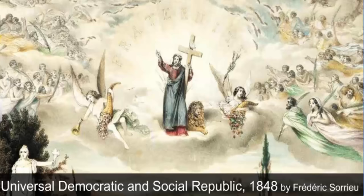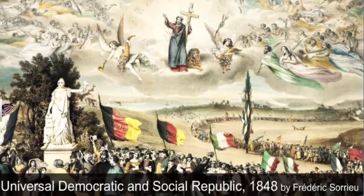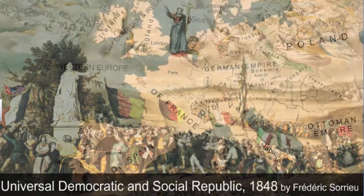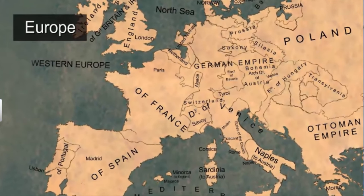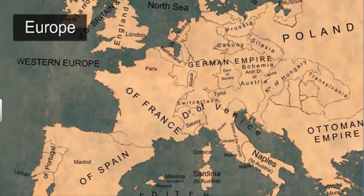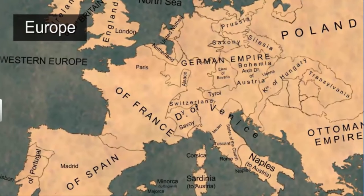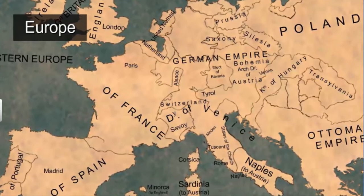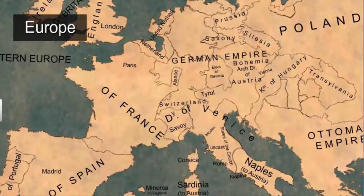This print is path-breaking as it reflects the mood of the times and forebodes an era of revolutions that marked Europe during the 19th century. During the 19th century, Europe was undergoing a phase of transition. The long-oppressed peasantry had begun to question the landed aristocracy and the feudal system. On the other hand, rapid industrialization had given birth to the middle class, consisting of industrialists, businessmen, and professionals.